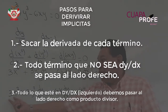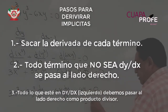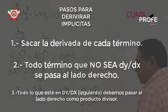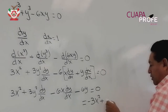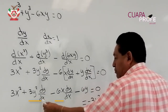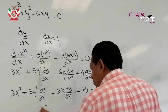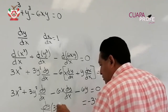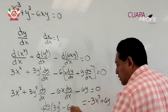El término 3x cuadrada tiene signo positivo y lo paso al otro lado de la igualdad: menos 3x cuadrada. El término menos 6y también lo paso al lado derecho de la igualdad, quedando más 6y. Del lado izquierdo me queda 3y cuadrada por la derivada de y con respecto de x, como factor común, que multiplica a 3y cuadrada menos 6x.